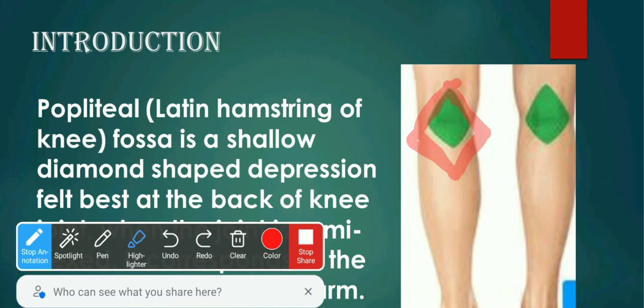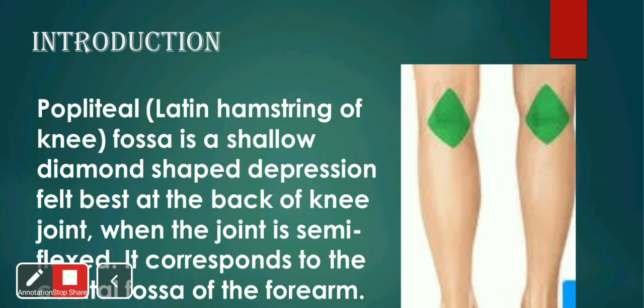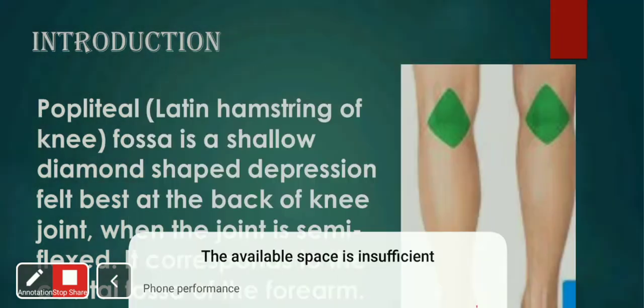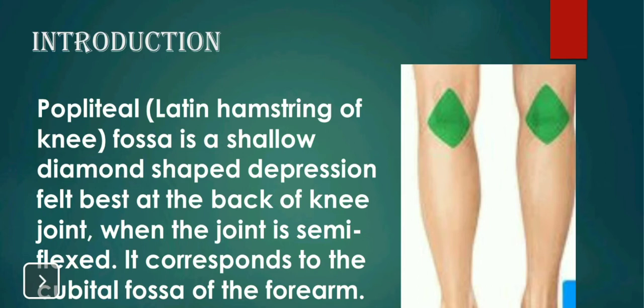Just like the cubital fossa which is in the forearm. So where is it? It is behind the knee joint. Popliteal fossa is a diamond-shaped depression which we feel behind our knee joint when the joint is semi-flexed, just like the cubital fossa of the forearm.